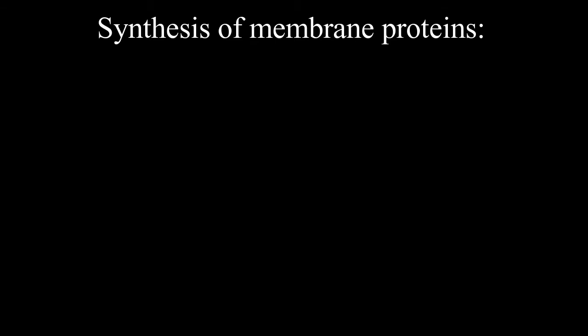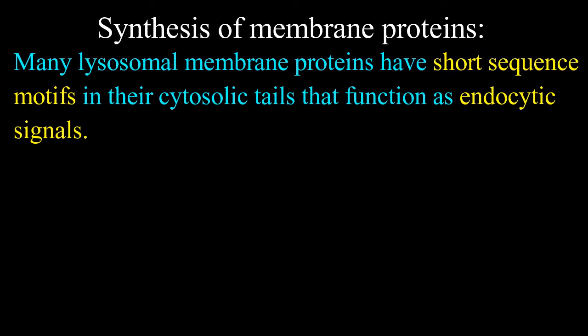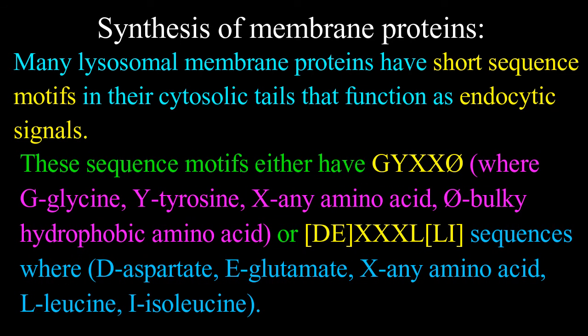Second, synthesis of membrane proteins. Many lysosomal membrane proteins have short sequence motifs in their cytosolic tails that function as endocytic signals. These sequence motifs either have GYXXI, where G is glycine, Y is tyrosine, X is any amino acid, and I is a bulky hydrophobic amino acid; or DE-XXXL-LI, where D is aspartate, E is glutamate, X is any amino acid, L is leucine, and I is isoleucine.